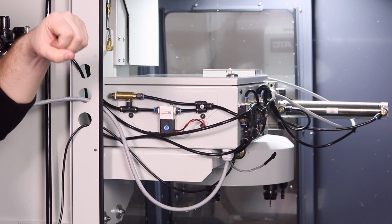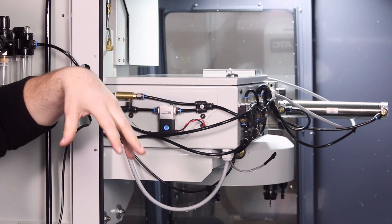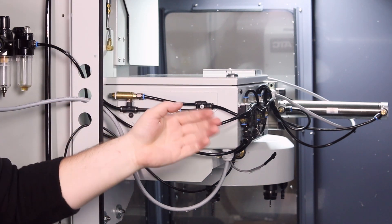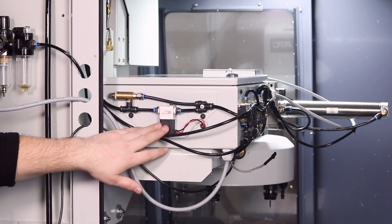If you have an issue where the tool orients and then immediately drops the tool before the carousel moves over, this can be an issue with the solenoid where it's sticking.